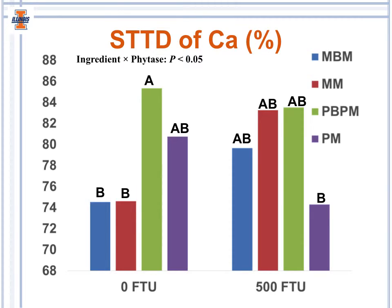For the standardized total tract digestibility of calcium, we see the same trend: in the absence of phytase, digestibility of calcium in pigs fed poultry byproduct meal was greater than in pigs fed meat and bone meal or meat meal. However, when phytase was added, there were no differences across dietary treatments.